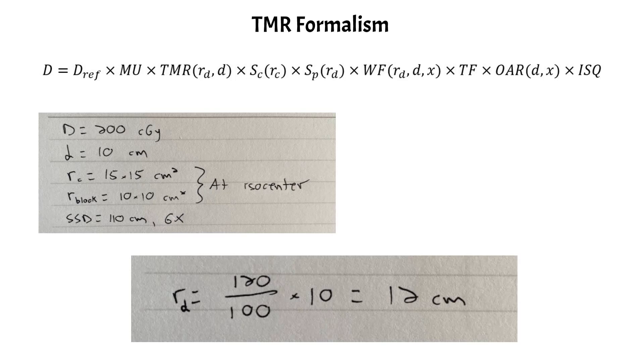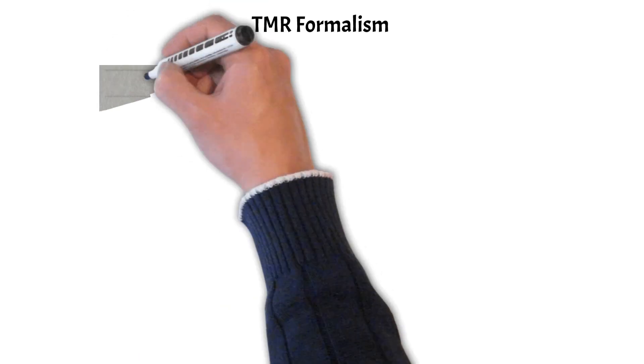TMR uses the blocked field size. And that gives us a blocked field size at the calculation depth of 12 centimeters. And just a reminder, that's the field size we use for the TMR and also the phantom scatter factor.